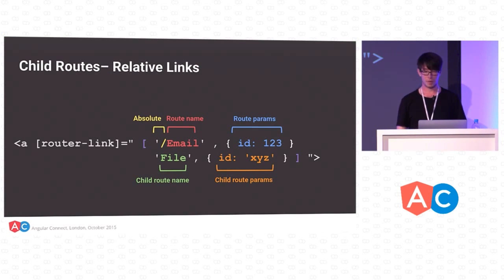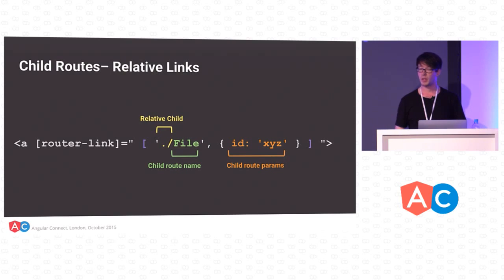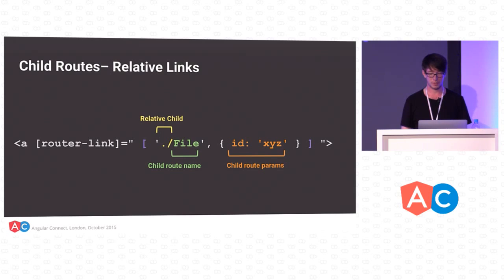Let's talk about the leading slash. If you're linking from anywhere in your app, you need to give the whole hierarchy of components from parent to child. But if you're linking just from the email component to its own child — say to the file view — you probably just want to reuse the existing parent route's information. This relative syntax using dot-slash means: just use whatever email we're on, pass those parameters along, and use that to construct a link. This just helps save you some typing.